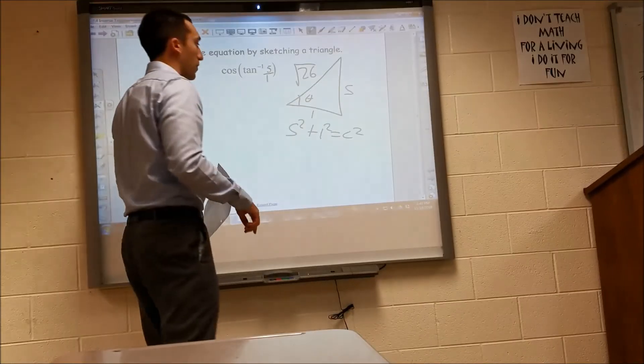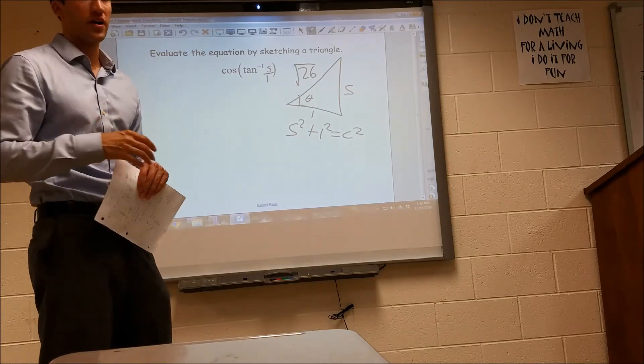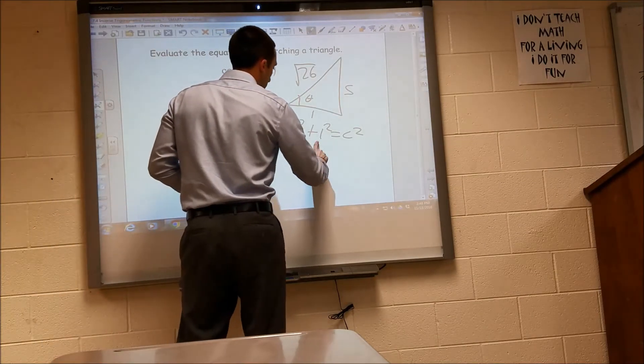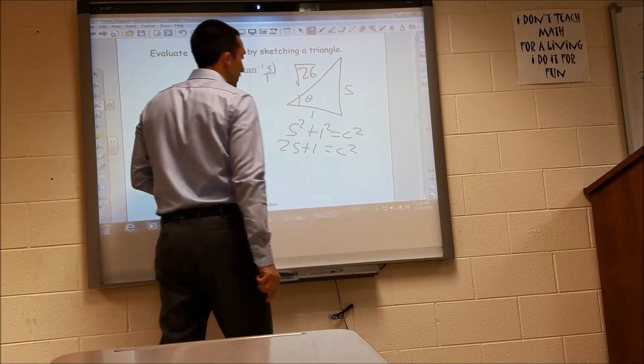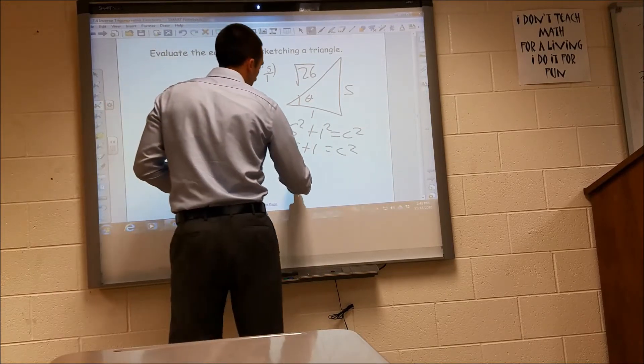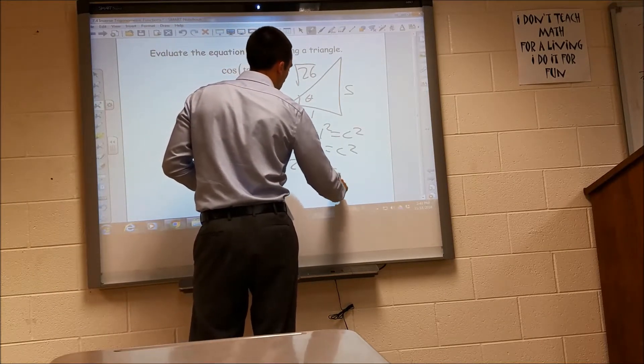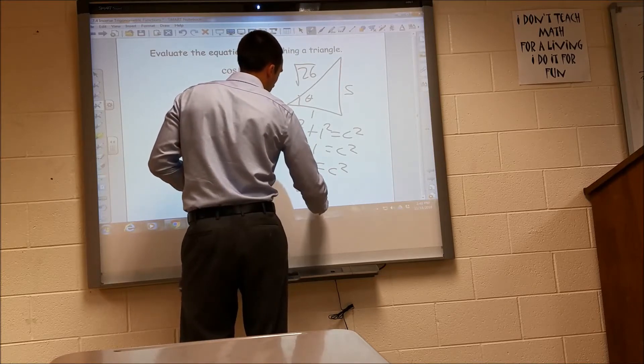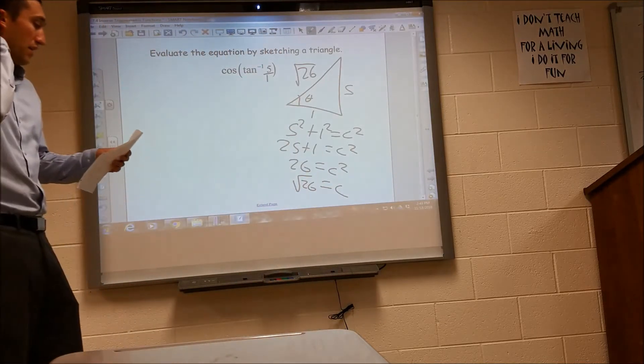Remember, the Pythagorean Theorem is A squared plus B squared equals C squared. Go ahead and plug in for A and B. C is your hypotenuse. And so we can see here we get 26 is C squared. So square root 26 is my hypotenuse.